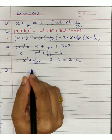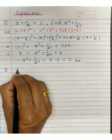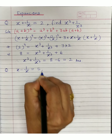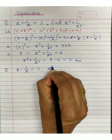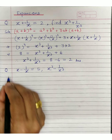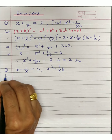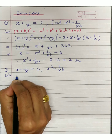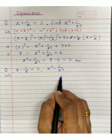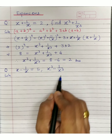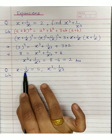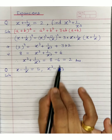Now for subtraction — if you are given x minus 1 upon x is equal to 5, you need to find x cube minus 1 upon x cube. Again, decide which formula to use. Since we have x minus 1 upon x and x cube minus 1 upon x cube, these terms come from a minus b whole cube.